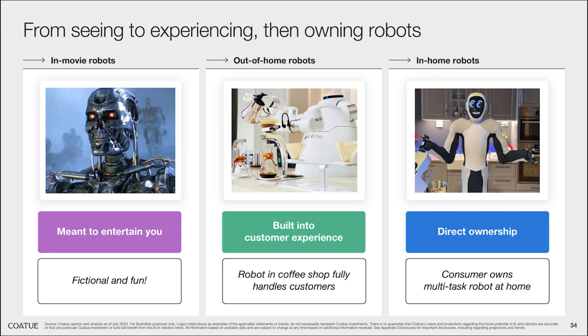Speaking of the robotics industry, we're going to look at some crazy future predictions from a reputable investment firm later in this video that might completely change your view of the future. But first, we have even more news coming from Meta AI. In a recent interview with Jensen Huang, Mark Zuckerberg talked about the future of social media algorithms, where AI will not only be used to predict what content you may like, but also to create it.